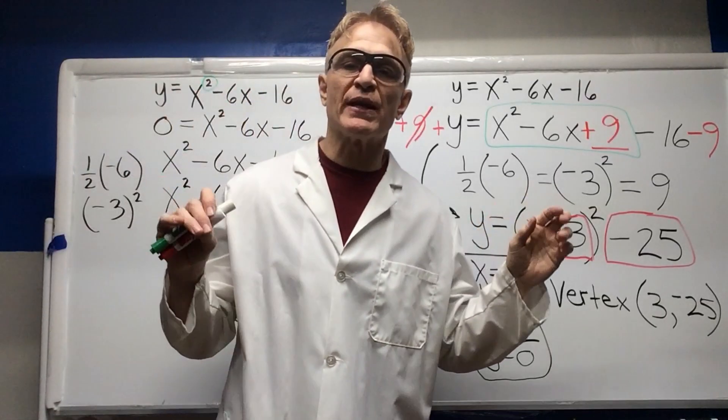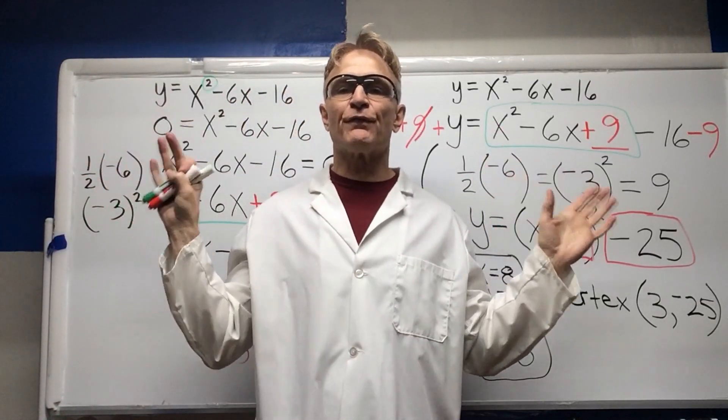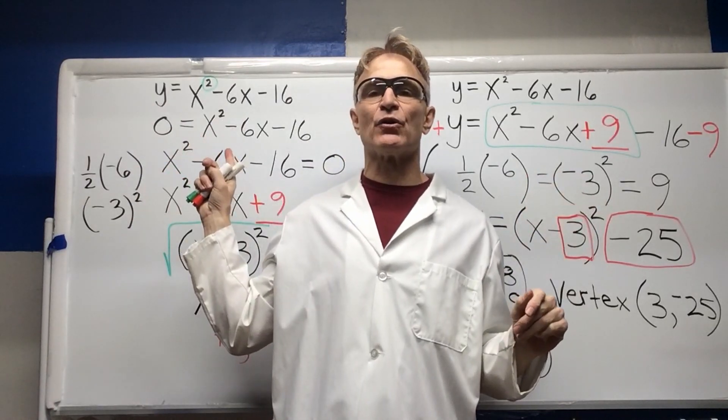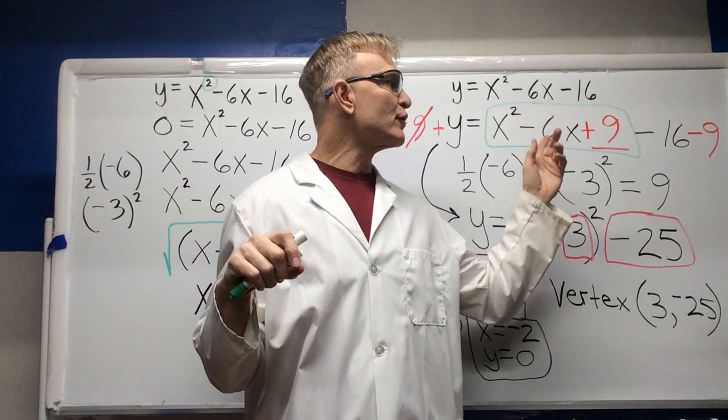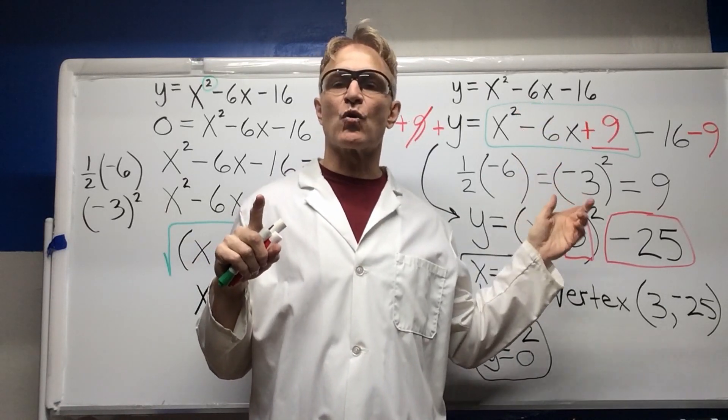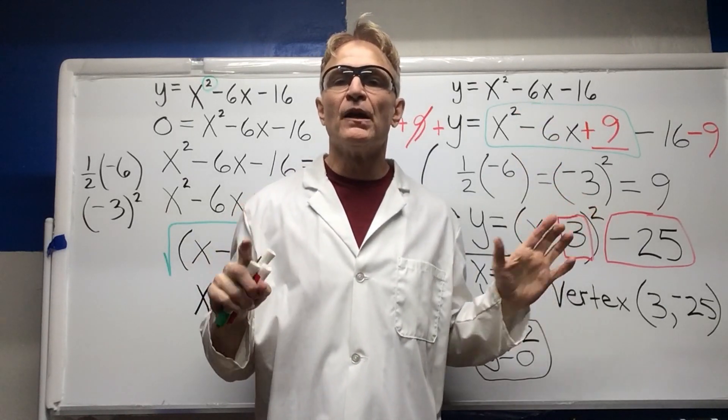So again, what we did is we completed the square in two different ways. One to find the zeros of the quadratic equation. The other one to find the vertex of the quadratic equation.